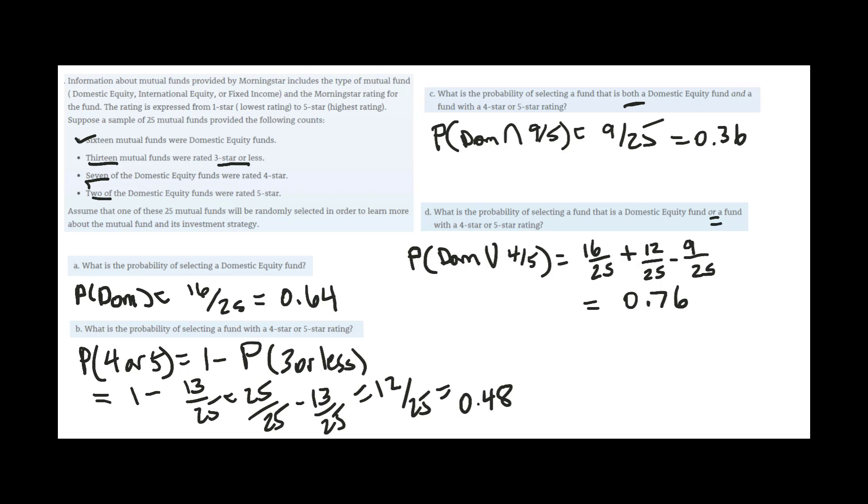So it's just understanding some of this terminology: that and, intersection, or union, complement one minus the probability that you know, to be able to easily answer these questions.